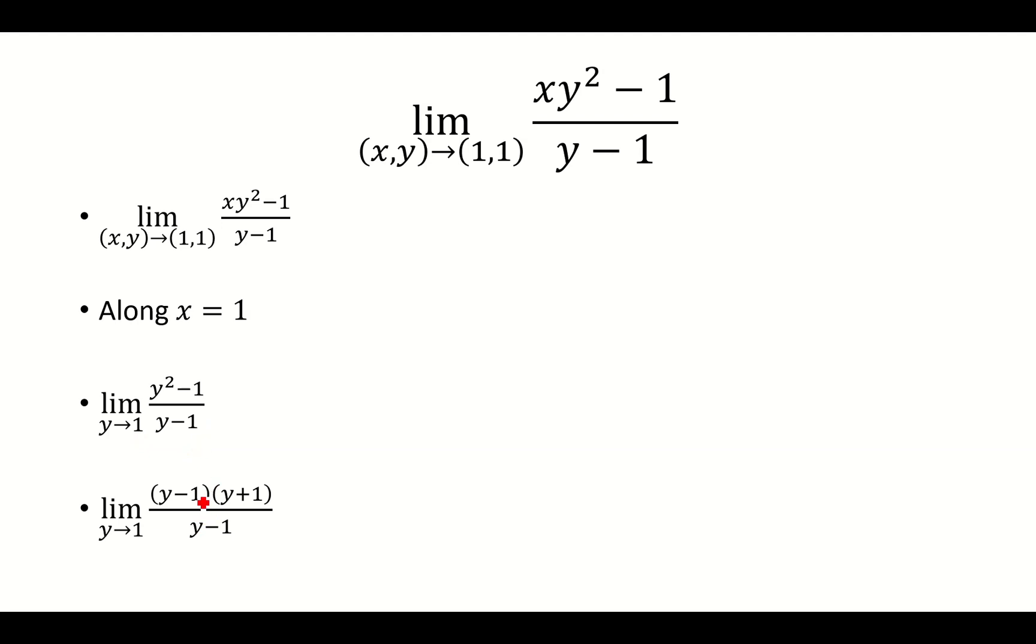So let's factor out the numerator into y minus 1 times y plus 1. The y minus 1s cancel. And then we plug in y equals 1 to y plus 1 and get 2 as our limit.